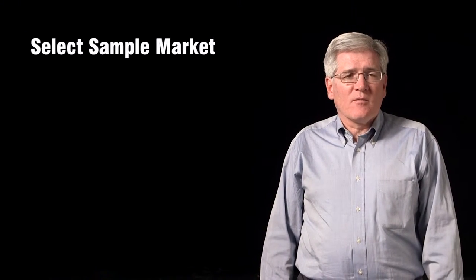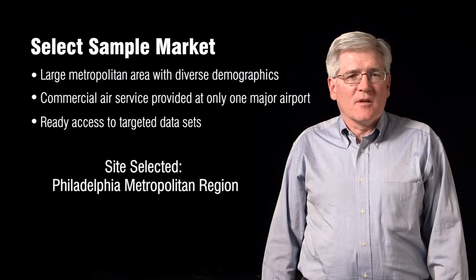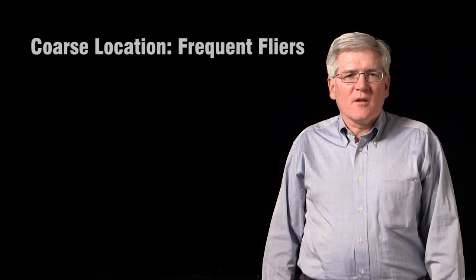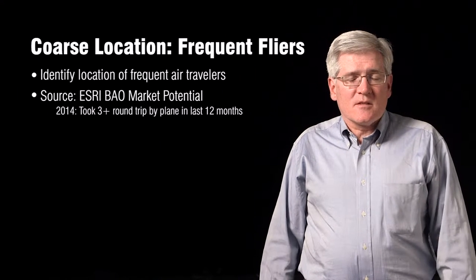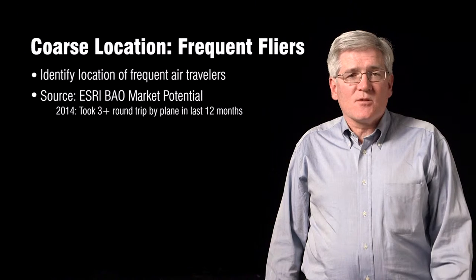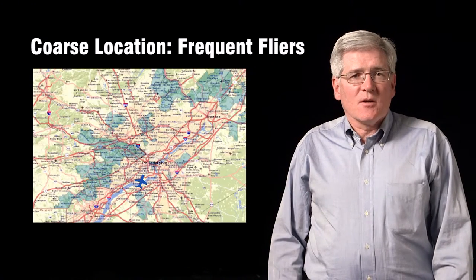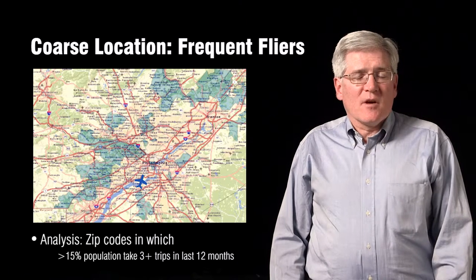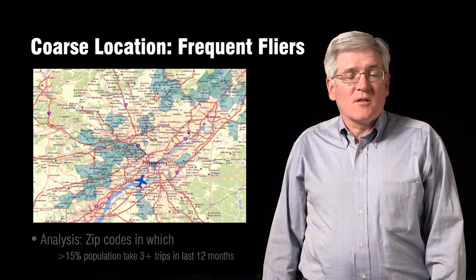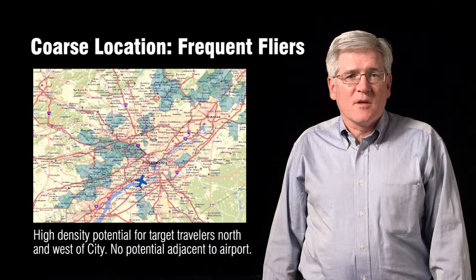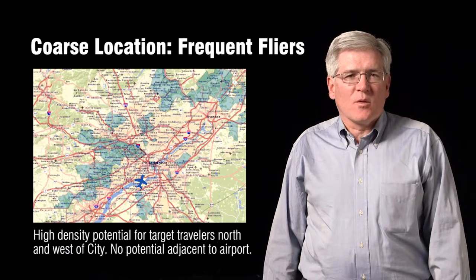For the sample market, I was looking for an urban area with a single airport that had lots of good data about the demographics. I selected the Philadelphia region for this purpose. One of the first things we can evaluate is who travels by air. Esri's online system has a dataset for exactly this — who has traveled more than three times in the last 12 months, divided by zip code. Here you can see in the green spaces, households by zip code that have traveled three times or more in the last year. Philadelphia Airport is at the airplane icon in the center. You can see north and west of the city is a large density of travelers, and up near the Trenton area another center. We're going to focus on this area north and west of Philadelphia Airport.